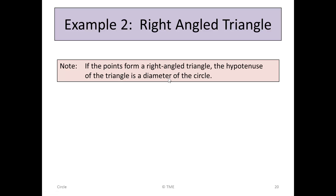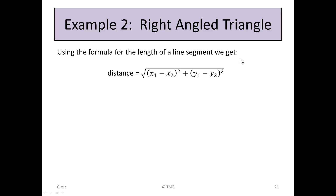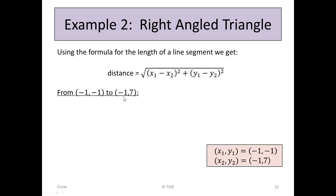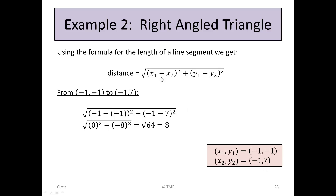We don't have to prove that theorem here, we just use it. Using the distance formula, we find each side length. From (-1, -1) to (-1, 7): the x-values are the same, so the distance is just 7 - (-1) = 8. From (-1, -1) to (5, -1): the y-values are the same, so the distance is 5 - (-1) = 6.